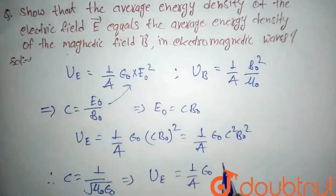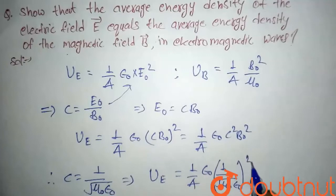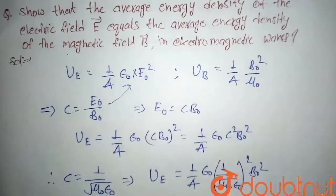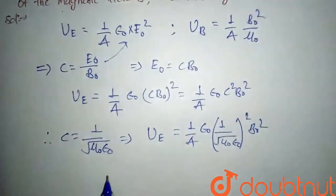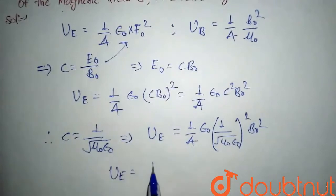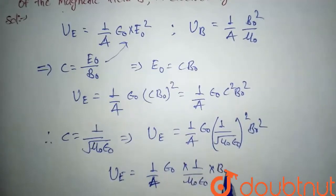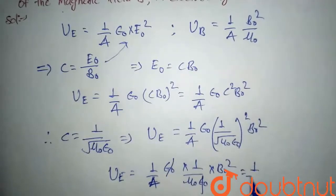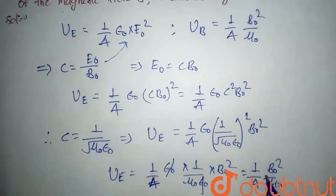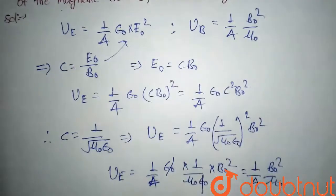...epsilon naught times 1 upon (mu naught times epsilon naught) times B₀ squared. Simplifying, epsilon naught cancels with epsilon naught, and we get 1 by 4 times B₀ squared upon mu naught, which is equal to U_B.